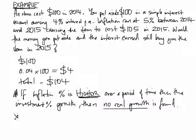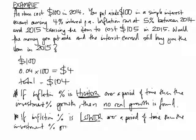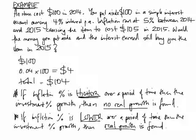The opposite is the case as well: if the inflation percentage is lower over a period of time than the investment percentage growth, then real growth is found. So that is inflation explained, with examples of how inflation works, how the buying power of certain investments can be affected by the inflation rate, and notes on whether real growth in investment is found or not found.